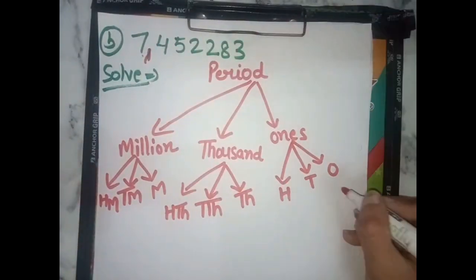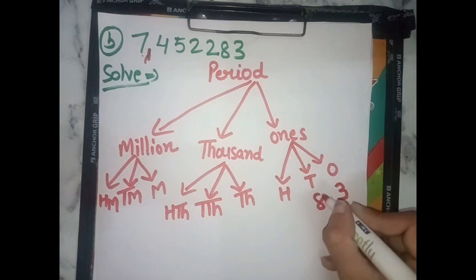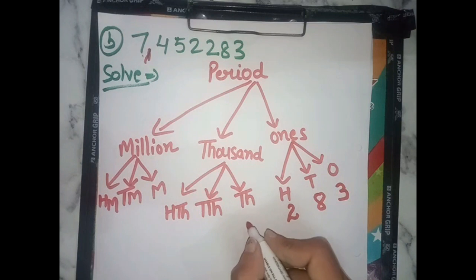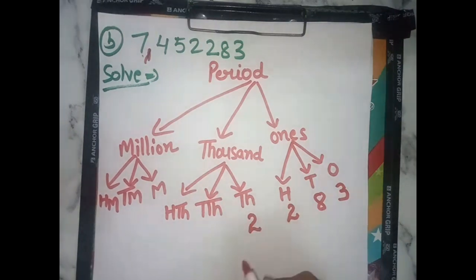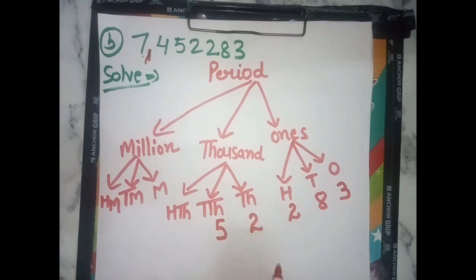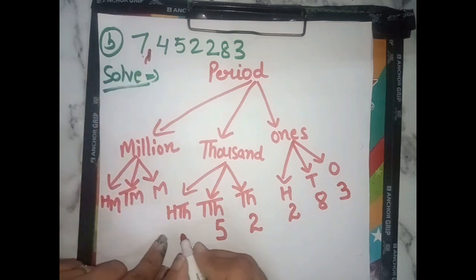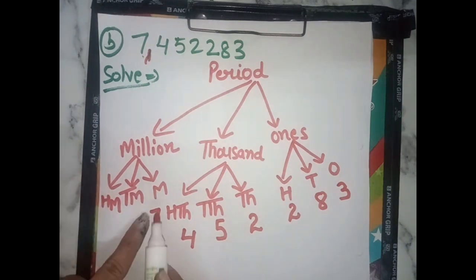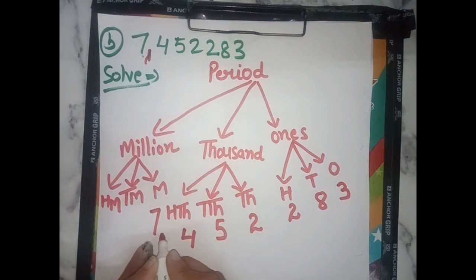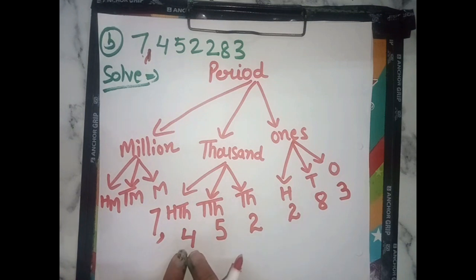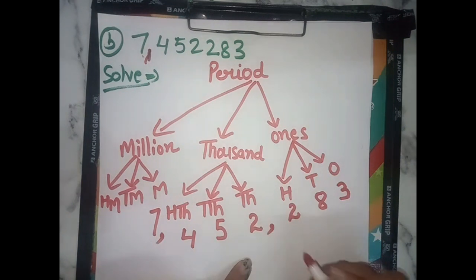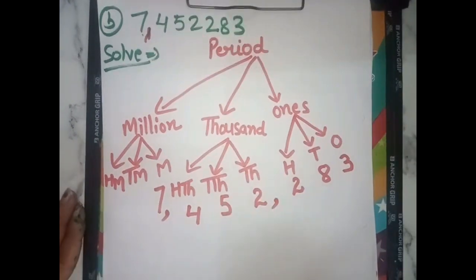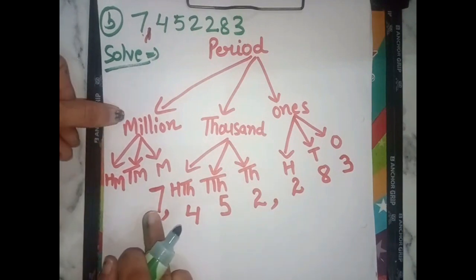Now filling in the digits: 3 goes in ones; 8 goes in tens; 2 goes in hundreds; 2 goes in thousands; 5 goes in ten thousands; 4 goes in hundred thousands; 7 goes in millions. So we write comma: 452 — four hundred fifty-two thousand — comma to separate the period. Then 7 million.